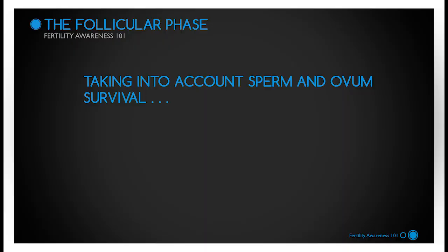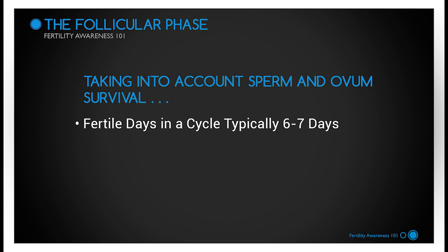Remember that the ovum will die unless fertilized within 24 hours after release. However, sperm can live up to five days waiting for ovulation to occur. Taking into account sperm survival and ovum survival, the fertile number of days in a cycle is generally considered to be six to seven days.